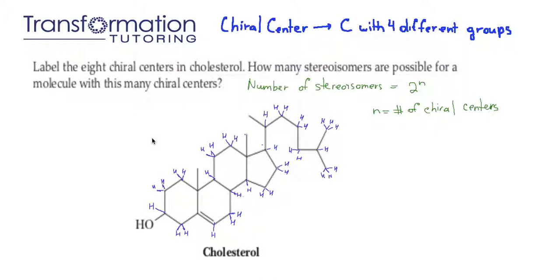The first thing we need to do is label all the hydrogens. You can see that I already showed all of the hydrogens on this cholesterol molecule. We figure out how many hydrogens by knowing that each carbon wants to have four bonds. So if you see a carbon with two bonds, then you know you need two more hydrogens to make it have four bonds. Everything has been labeled with the correct number of hydrogens and we can right away eliminate all of the carbons that have two or three hydrogens, because they cannot have four different groups since they already have two or three of the same groups.